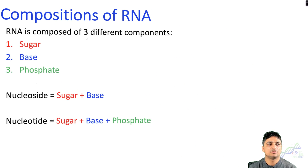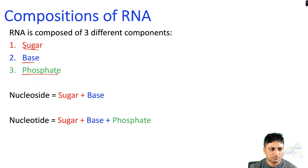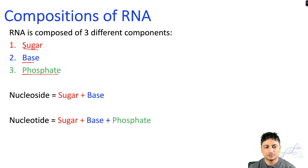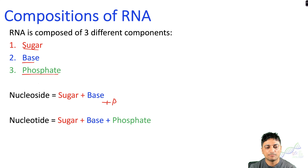Next we'll focus on the composition of RNA. RNA is composed of sugar, base, and phosphate. Sugar and phosphate form the backbone. Sugar and base together are called a nucleoside, and if we add a phosphate group to the nucleoside then it becomes a nucleotide — sugar, base, and phosphate bond.